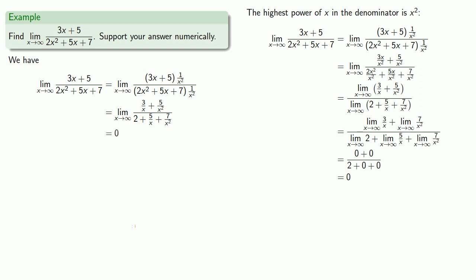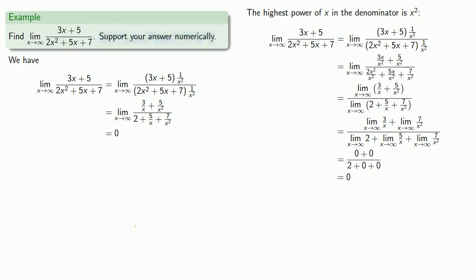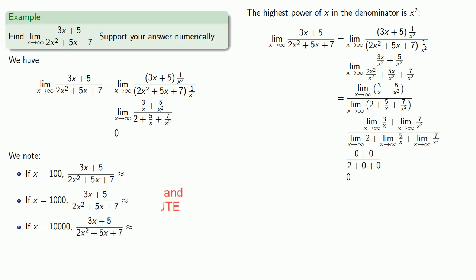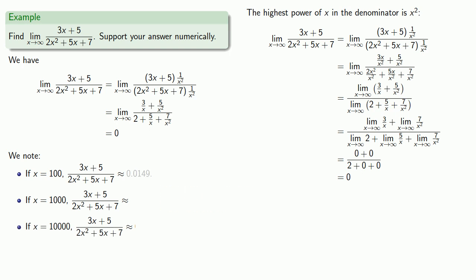Now let's also find some numerical support for this answer. We're trying to find out what happens to this expression as x gets larger and larger, so we'll pick some large values for x. At x equals 100, 1000, or 10,000, it appears we are getting values close to 0, which supports our claimed limit of 0.